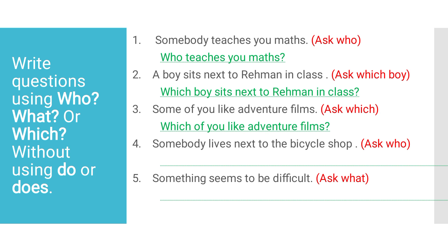Fourth one: 'Somebody lives next to the bicycle shop.' Again we have to frame a question with who. Do it fast. Very good! 'Who lives next to the bicycle shop?' Have you understood, students? Very nice.